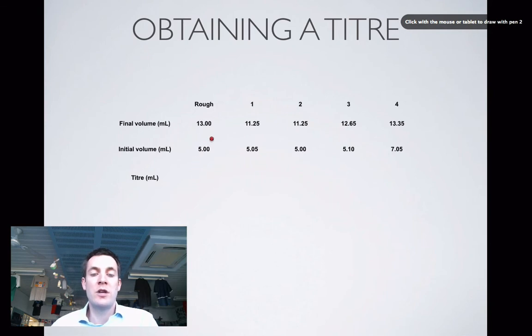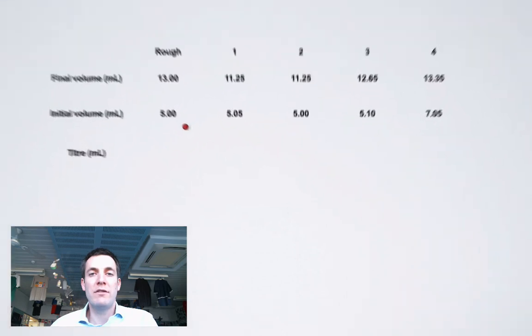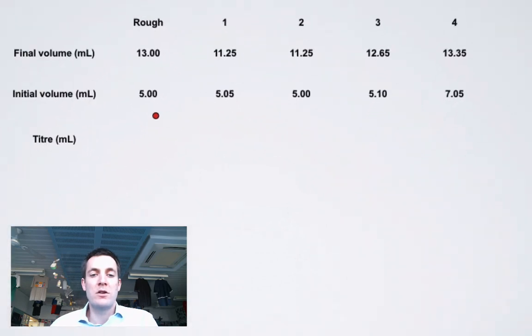By the time you've finished your titration and you've got a few sets of results, you'll end up with some data that really ought to be put into a table. We've got the final volumes measured up here and the initial volumes down there. Notice that every one of them is written to two decimal places. Although the markings on your burette might only have one decimal place, it's normally possible to see if you've got halfway between two markings or if you're exactly on a marking. When you're figuring out your titers, make sure that you give them to two decimal places. So this one would be 8.00 rather than just 8 milliliters, and this one would be 6.20.